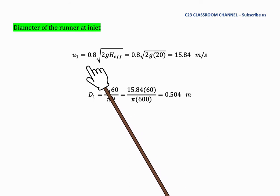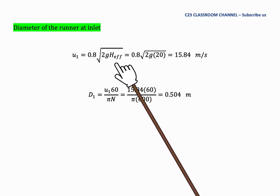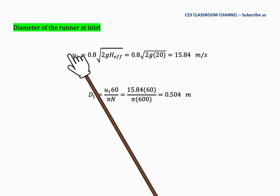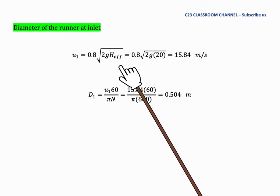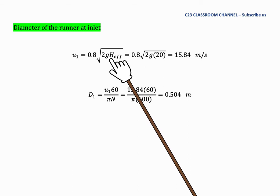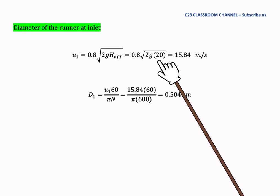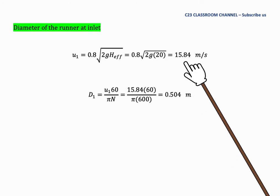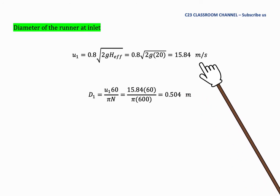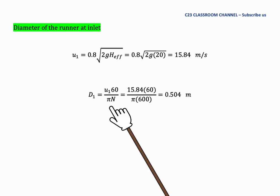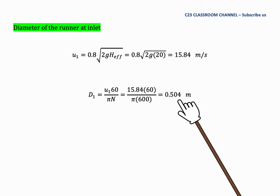U1 can be calculated using this equation given in the question. We substitute the value of H here with H effective which is equal to 20 meters. We get U1 is equal to 15.84 meters per second. We substitute in this equation and get D1 is equal to 0.504 meters.